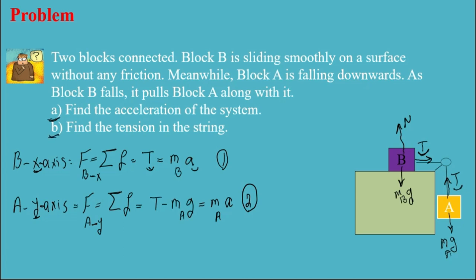So what I'm gonna do is substitute T from equation one into equation two. So it's 1 in 2. So it's m_B a minus m_A g equals m_A a.